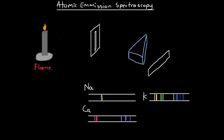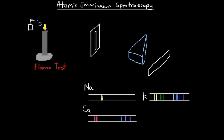The idea behind the flame test is that if we heat the atom of an element, its electrons will get excited, and as they de-excite, different colors will be emitted depending on what atom we're looking at. We're using heat to excite the atom. If we've got a solution of sodium and we spray that into a flame, then the flame will turn yellow.